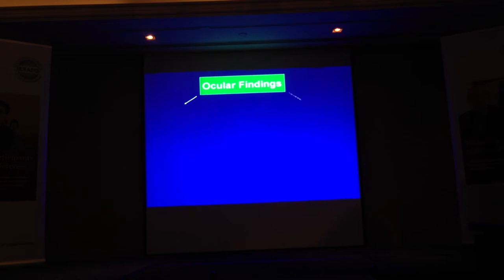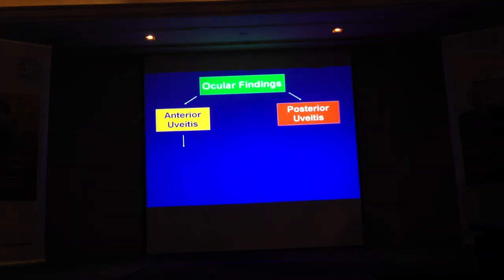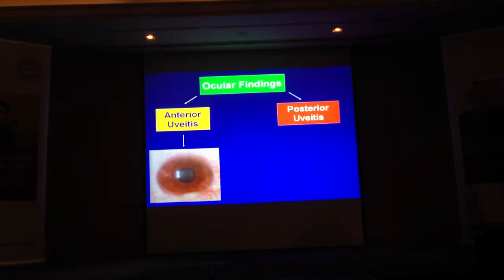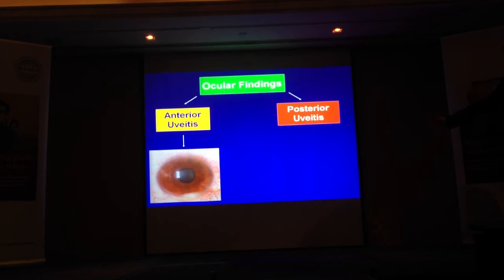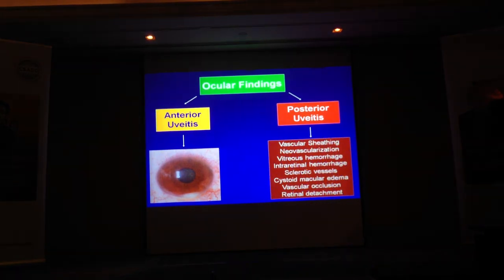When we look at patients with retinovasculitis, we consider both the anterior aspect — which can include anterior uveitis — and the posterior aspect. Retinovasculitis can associate with anterior uveitis. If you see a hypopyon in anterior uveitis, the two most common diagnoses are Behçet's disease and HLA-B27-related disease. For the posterior uveitis, you can see sheathing, neovascularization, hemorrhages, or spurring of vessels depending on disease stage.